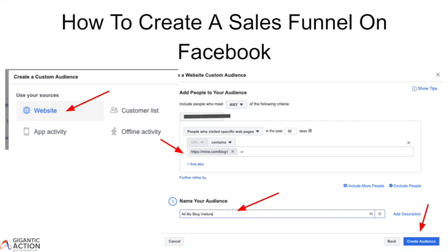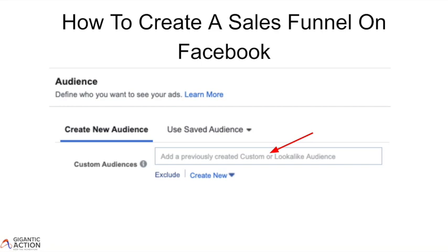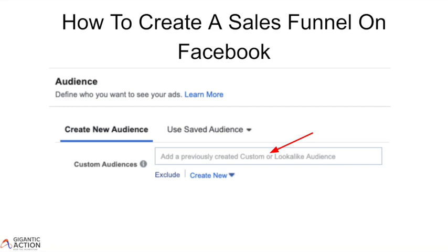Give the audience a name, and then click Create Audience. You've now created an audience of all the people that have visited your particular blog page. When this audience is created, you'll be able to choose it in the Adset Custom Audience section when creating your ads.